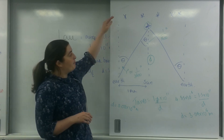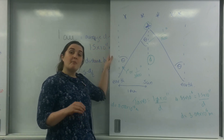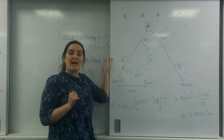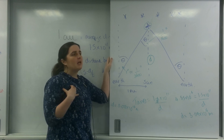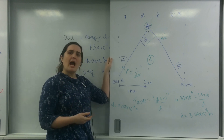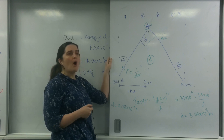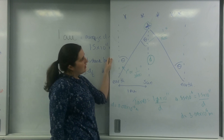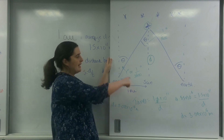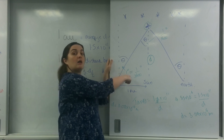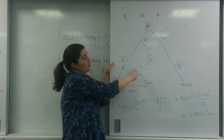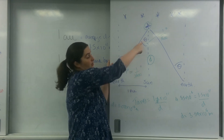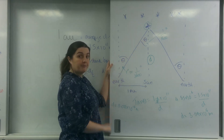You may be given parallax angles in problems - for example, they may tell you a star has a parallax of 2 arc seconds and ask how far away it is. That means this angle would be 2 arc seconds, so 2 over 3,600 degrees, and you can just use trig to solve it.